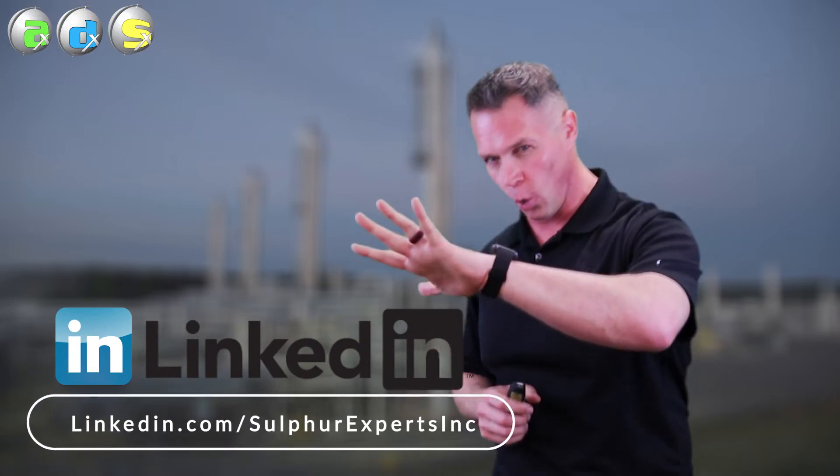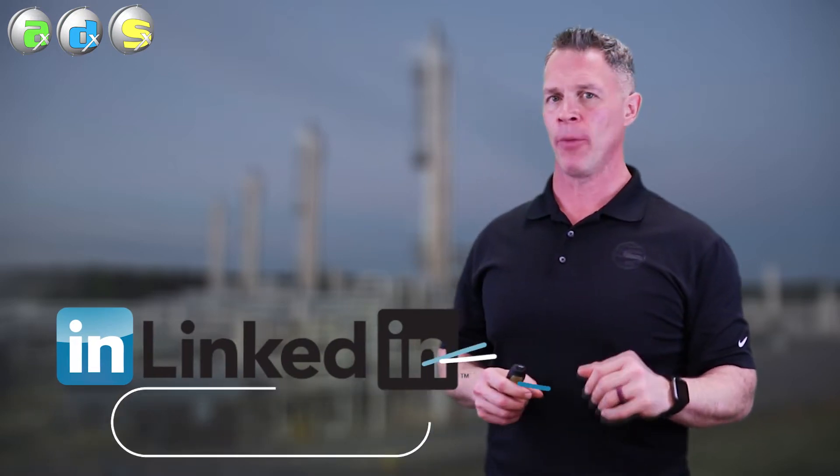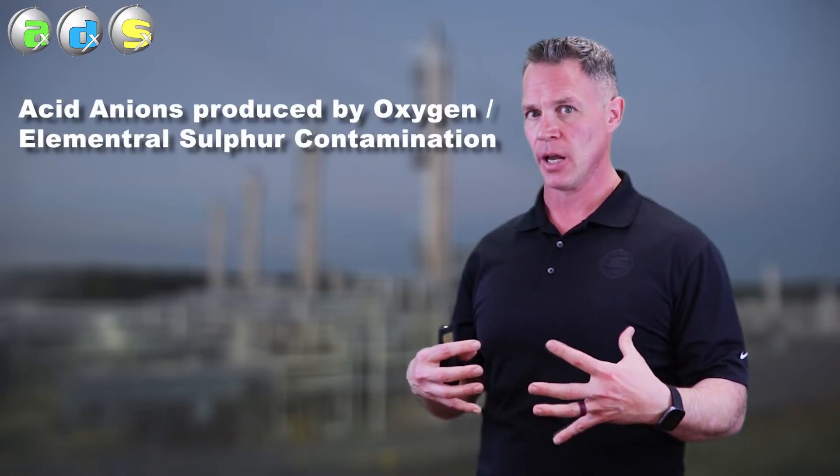The first one we want to discuss today is oxygen. Oxygen or elemental sulfur, they both have similar effects on the amine. Let's go through the type of acid anions you can expect to see if you get contamination by oxygen or elemental sulfur in your amine.